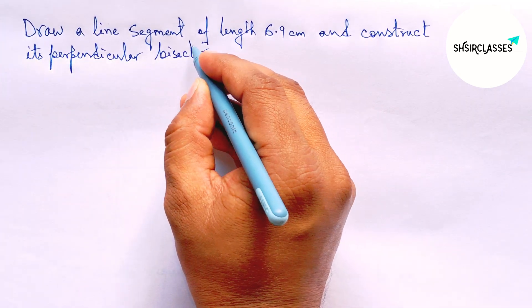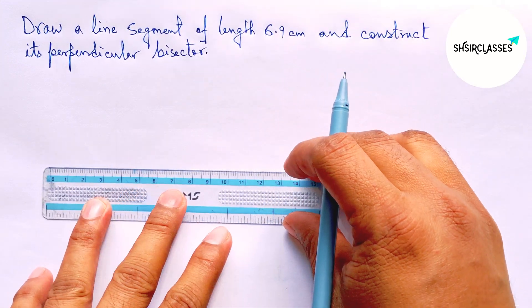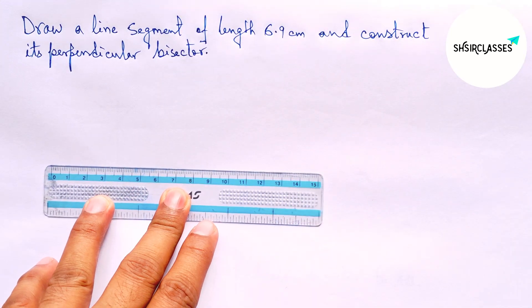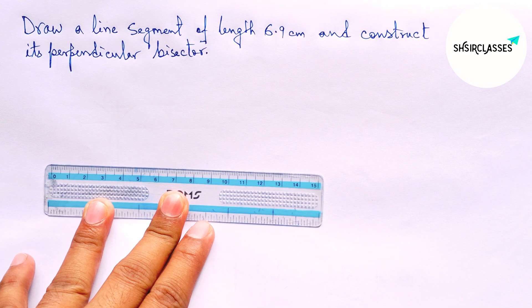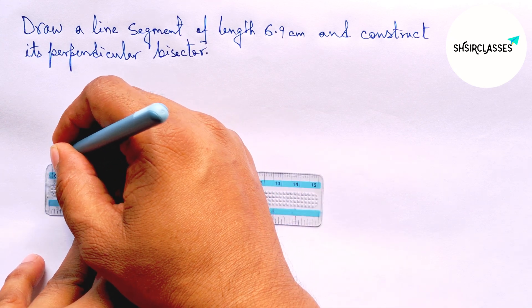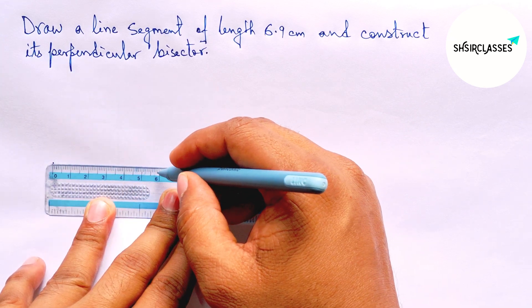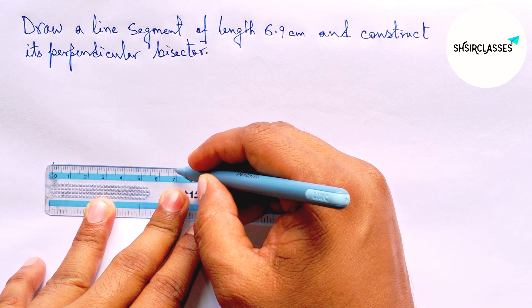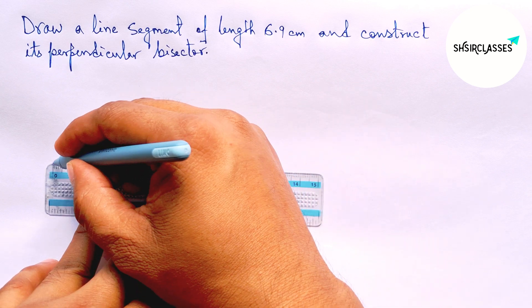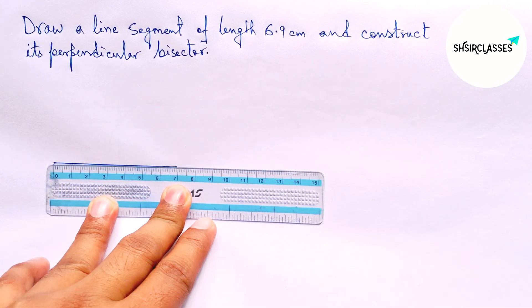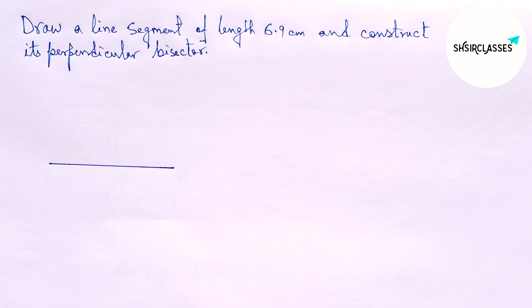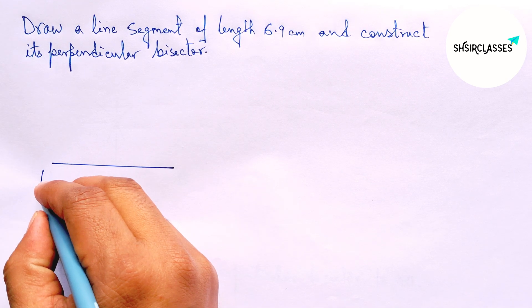So let's start the video. First of all, let us draw here a line segment of length 6.9 centimeter. So here 6, and this is 6.5, and counting 4 so 6.9 centimeter. This is a 6.9 centimeter line segment.